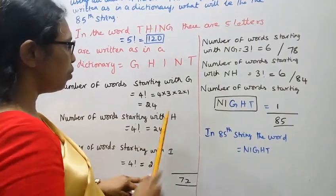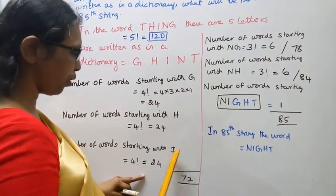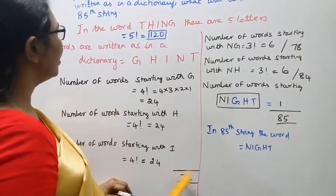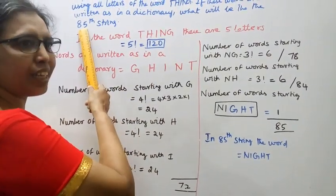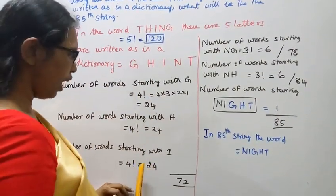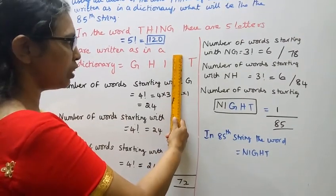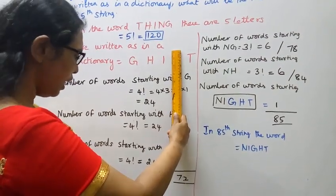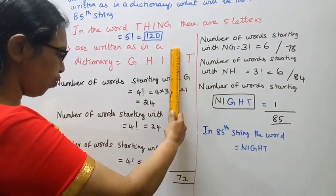24 plus 24 plus 24 equals 72. This gives 96th onwards. We need 85th string, so we need to go further.